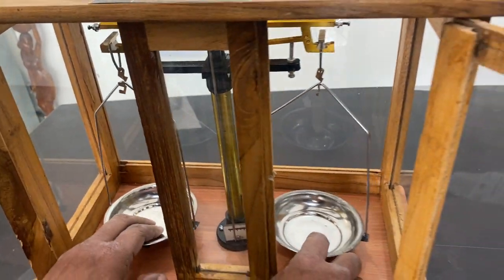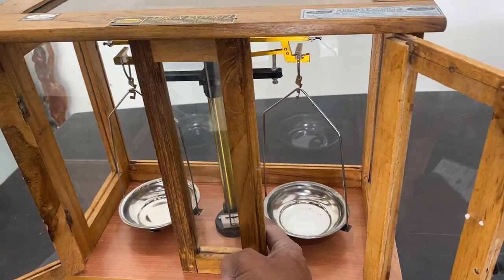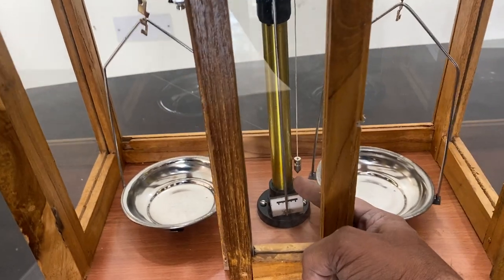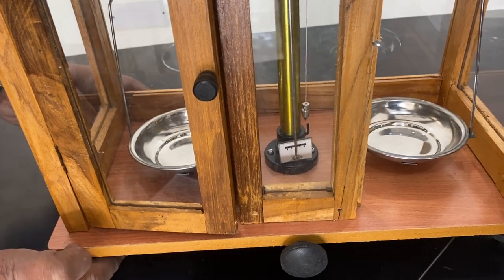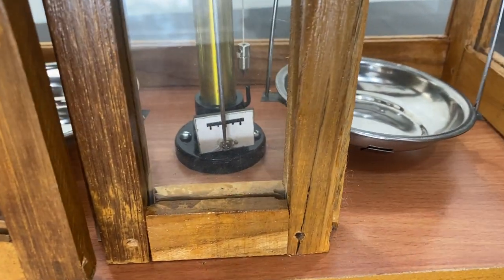Now I hold it. See, the plumb line is not matching - it's a little to the left side. So I slowly adjust the height, and now the plumb line is coming to the center.